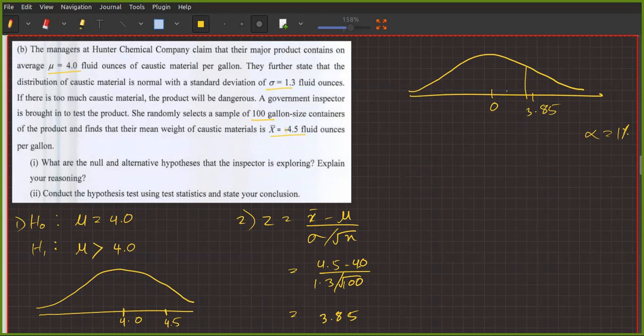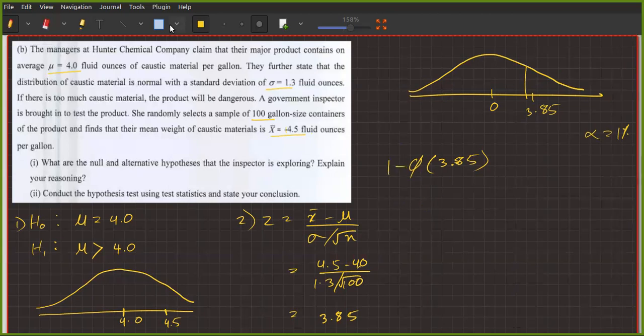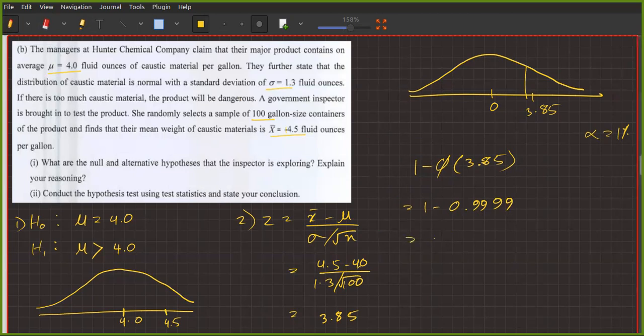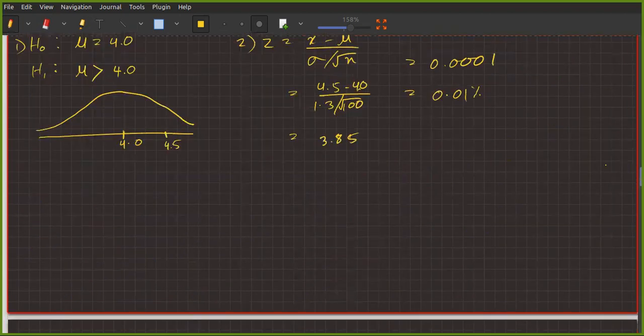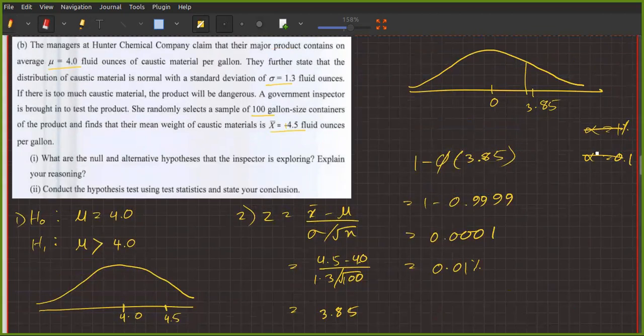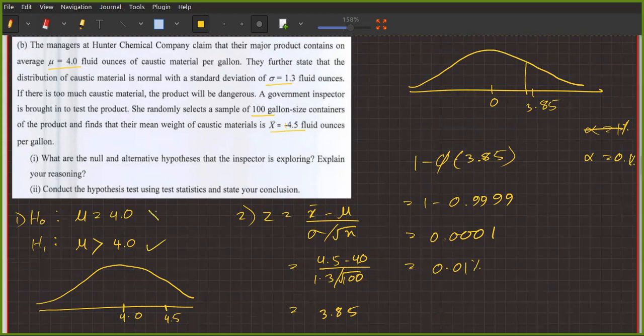This is equal to 0.0001, or 0.01%, which is very very less than 1%. I mean, much less than alpha 1%. If that happened, we can say the alternative hypothesis is acceptable and the null hypothesis will be rejected.